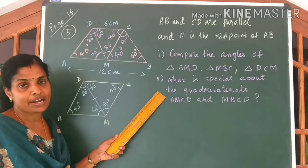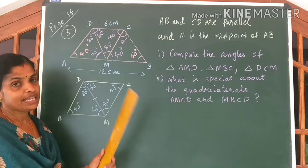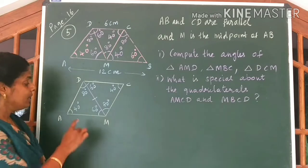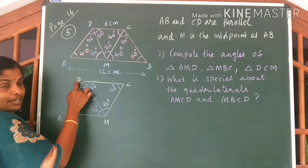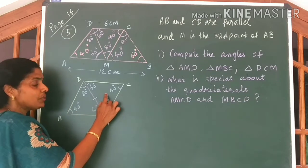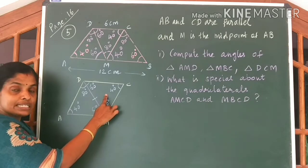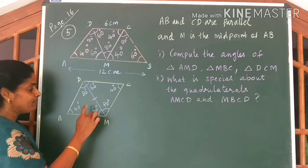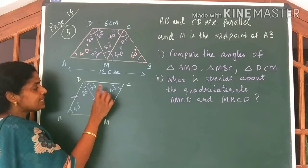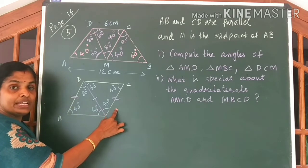Now I am explaining the second part of the question. What is special about the quadrilateral AMCD? I will explain one figure — the same idea applies to the second one also. I have drawn AMCD here and marked all the angles. We have proved these two triangles to be equal triangles. Since the triangles are equal, sides opposite to equal angles are equal. Opposite to 60 degrees, we have side AD. And opposite to this 60 degrees, we have side CM. So AD and CM are equal.